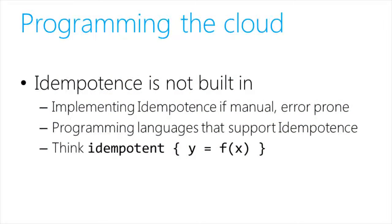Idempotence is a very key property, but unfortunately none of the current systems support it by default — it's not something that's built in. As a programmer, you have to design your system to be idempotent, and that whole process is very manual, time consuming, and tedious. So one of the questions we are asking is: can you design languages that support properties like idempotence from the ground up? Think of a clause in your programming language like 'idempotent' that you can wrap around any piece of code, and then that piece of code just becomes idempotent by default.